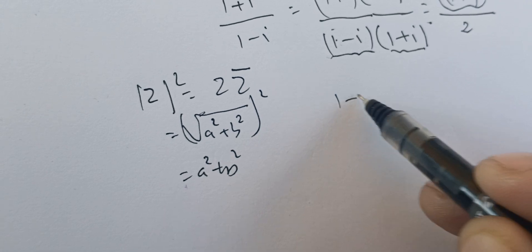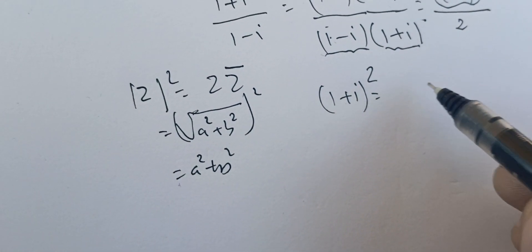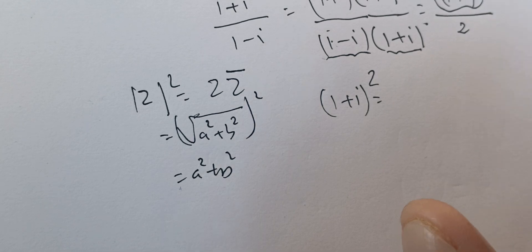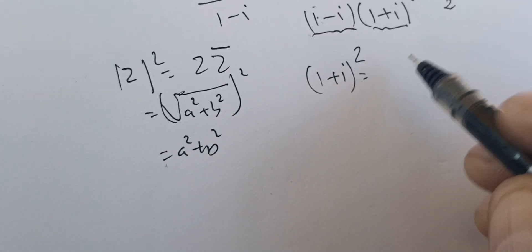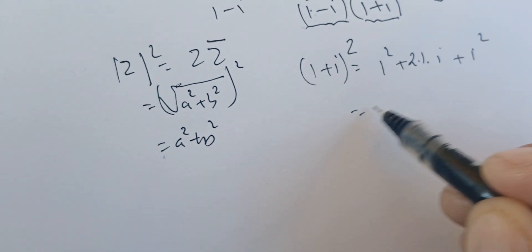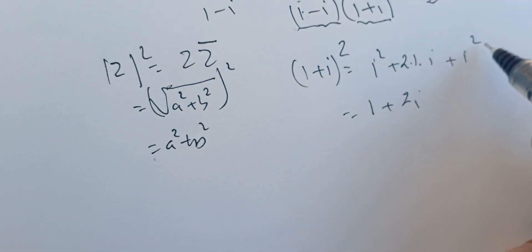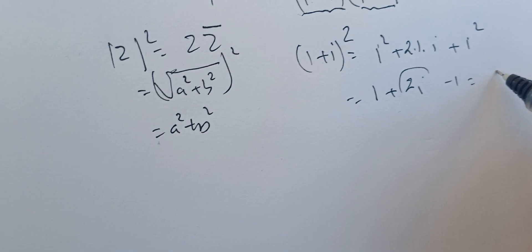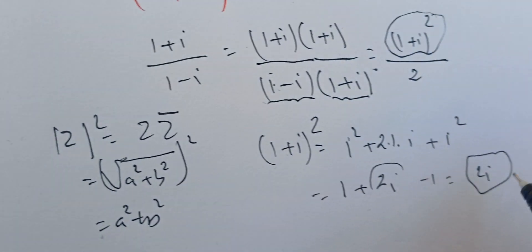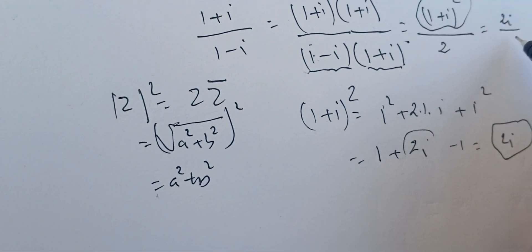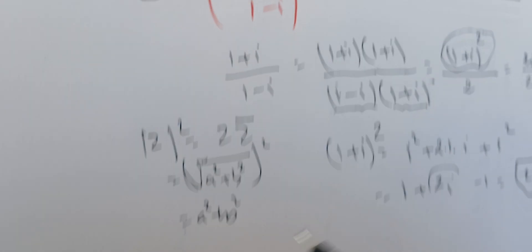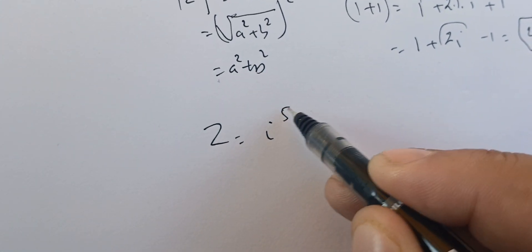Now let's compute (1+i)². We treat it like real algebra, not forgetting that i² = -1. We get 1² + 2×1×i + i² = 1 + 2i + (-1) = 2i. So (1+i)² = 2i, and we have 2i over 2, which is i. Therefore our number z can be written as i to the power 15.